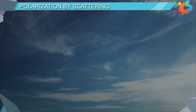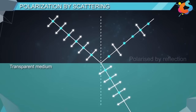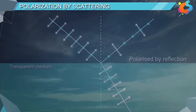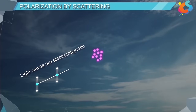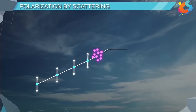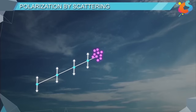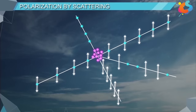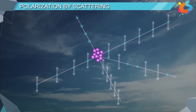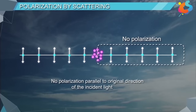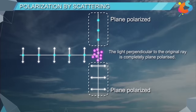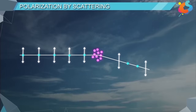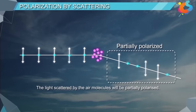Polarization by scattering. Just as unpolarized light can be partially polarized by reflection, it can also be polarized by scattering, also known as Rayleigh scattering. Since light waves are electromagnetic in nature, they vibrate the electrons of air molecules perpendicular to the direction in which they are traveling. The electrons then produce radiation that is polarized perpendicular to the direction of the ray. There is no polarization parallel to the original direction of the incident light. The light perpendicular to the original ray is completely plane polarized, while in all other directions the scattered light is partially polarized.